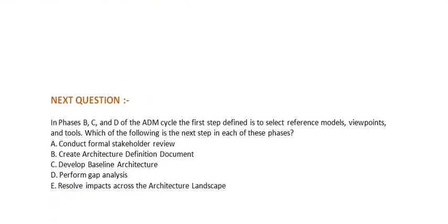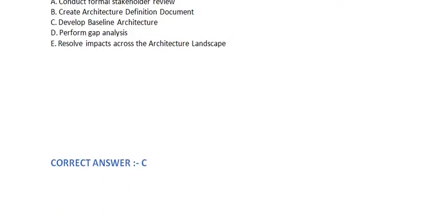Next question: In phases B, C, and D of the ADM cycle, the first step defined is to select reference models, viewpoints, and tools. Which of the following is the next step in each of these phases? Option A: Conduct formal stakeholder review. Option B: Create architecture definition document. Option C: Develop baseline architecture. Option D: Perform gap analysis. Option E: Resolve impacts across the architecture landscape. The correct answer is Option C.